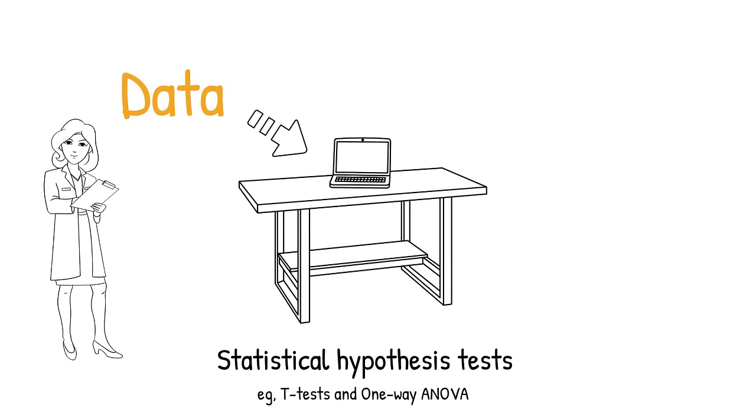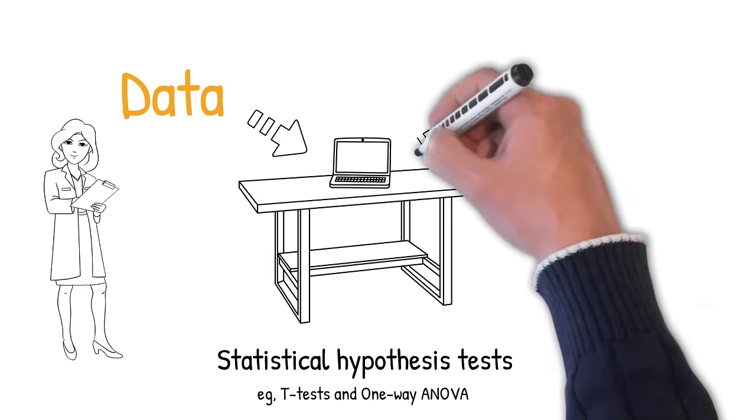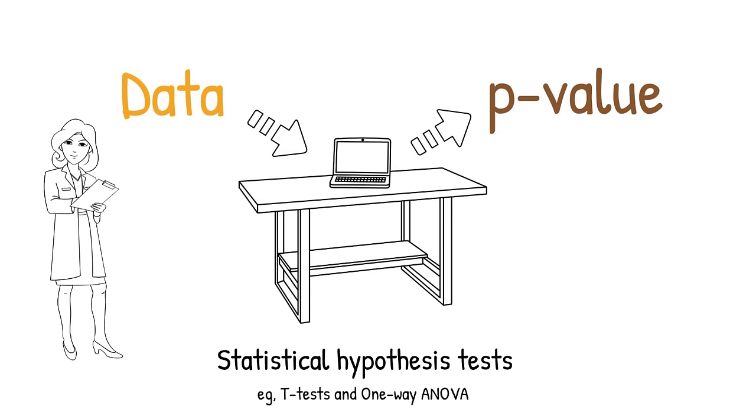So, after inputting our data into a statistical test, we get a p-value in return. Let's say for example, the p-value is 0.02.